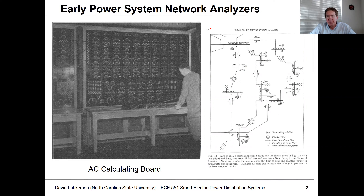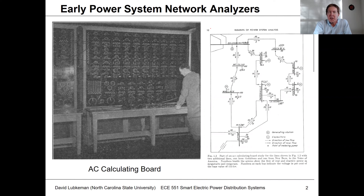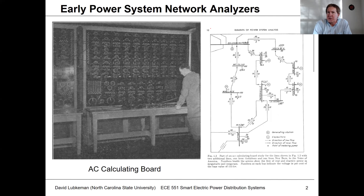If you look at an early edition of William Stevenson's textbook — a famous book on power system analysis — they've got some pictures that show a network analyzer. On the right you see a piece of transmission for North Carolina that was simulated in his textbook. On the left you see the network analyzer itself. The way this works is it's a scaled-down analog circuit — instead of working at 7200 volts like you would with the primary, you scale all the voltages down to something manageable.